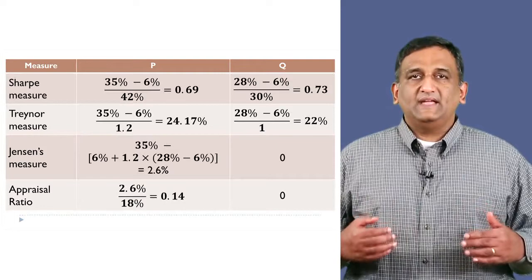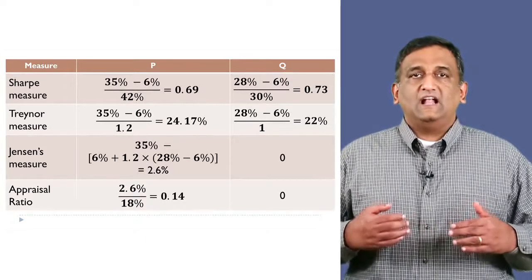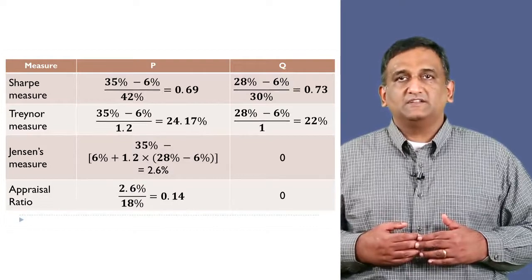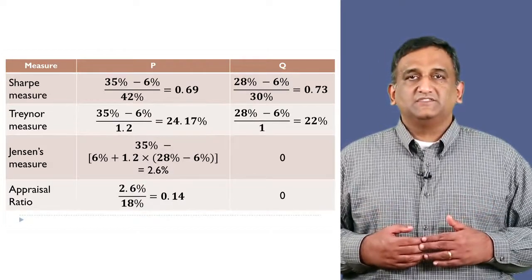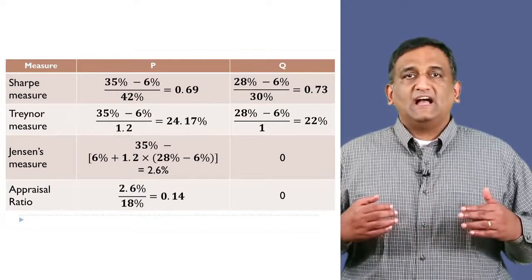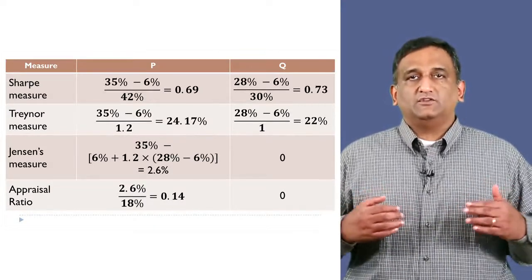Finally, P's appraisal ratio is its alpha 2.6% divided by its diversifiable risk of 18%, which gives us 0.14. Since Q's alpha is 0, its appraisal ratio is also 0.